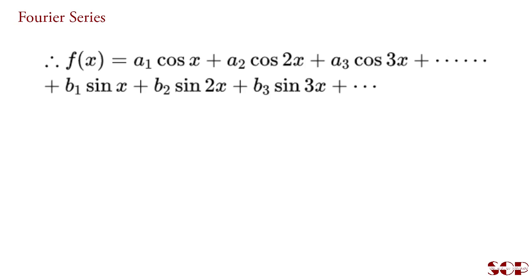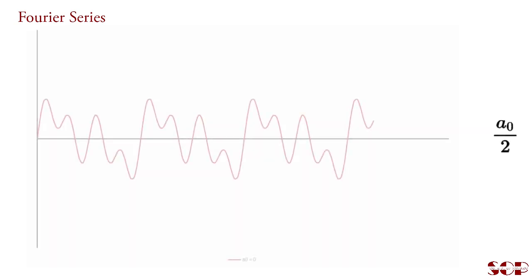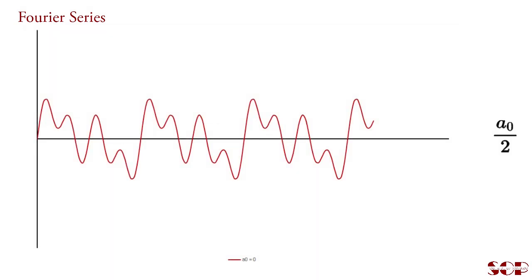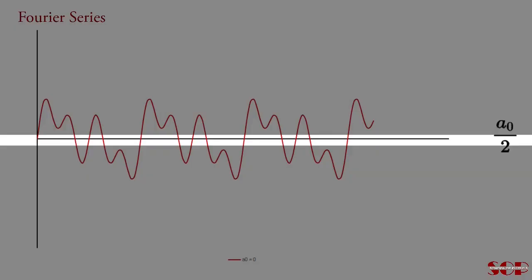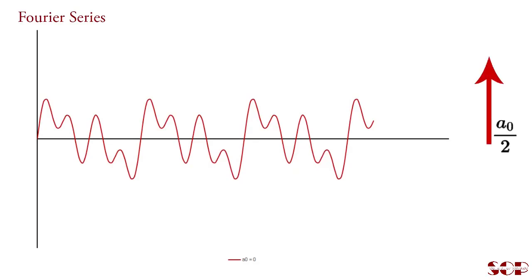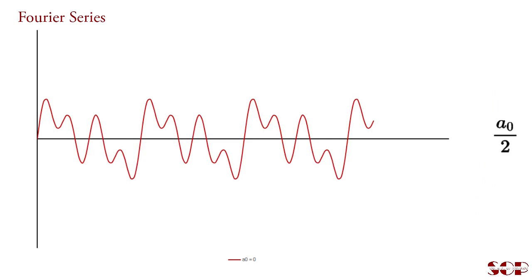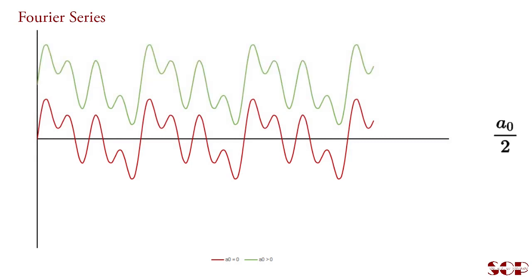We introduce one more term, a0/2. The question arises: why the term a0/2? It is for the indication of the DC line. Look at this figure — it is not necessary that the wave function is situated at the base line; it is possible it is some distance above or some distance below this base line. So the term a0/2 is introduced. If a0/2 has a positive value, the wave function is above the base line at a distance a0/2. If a0/2 has a negative value, the wave function is below the base line at a distance a0/2.